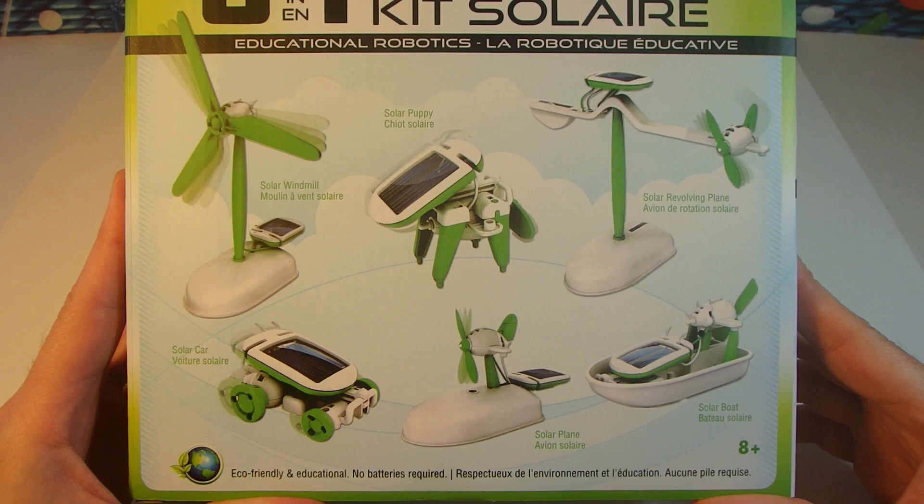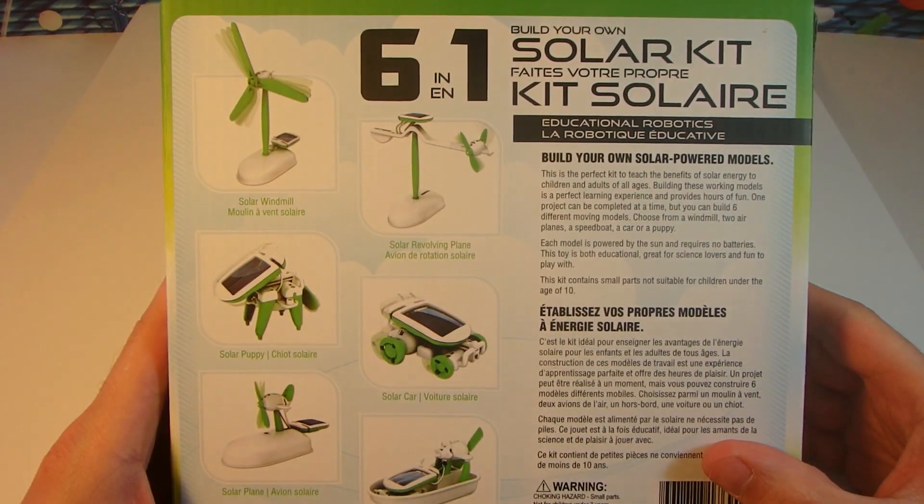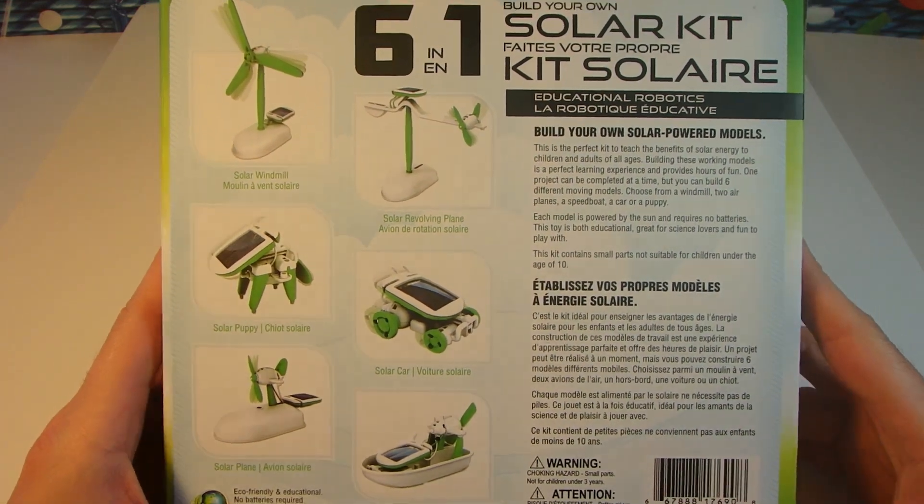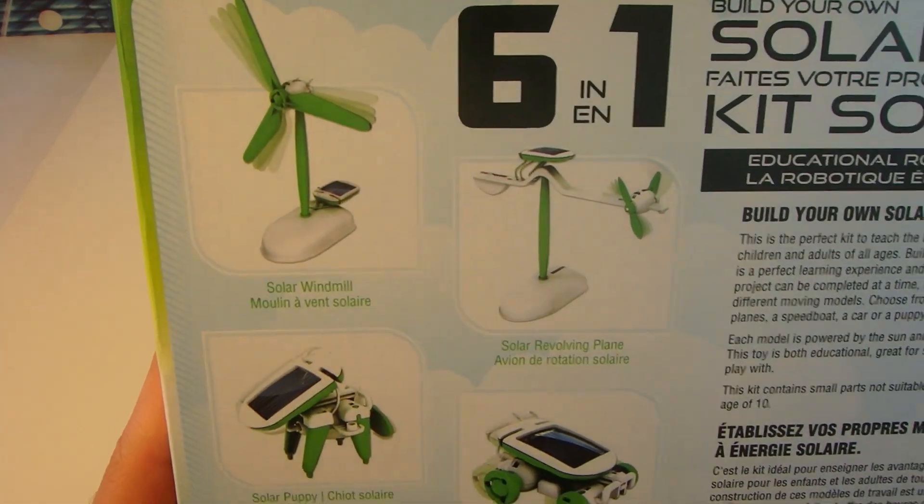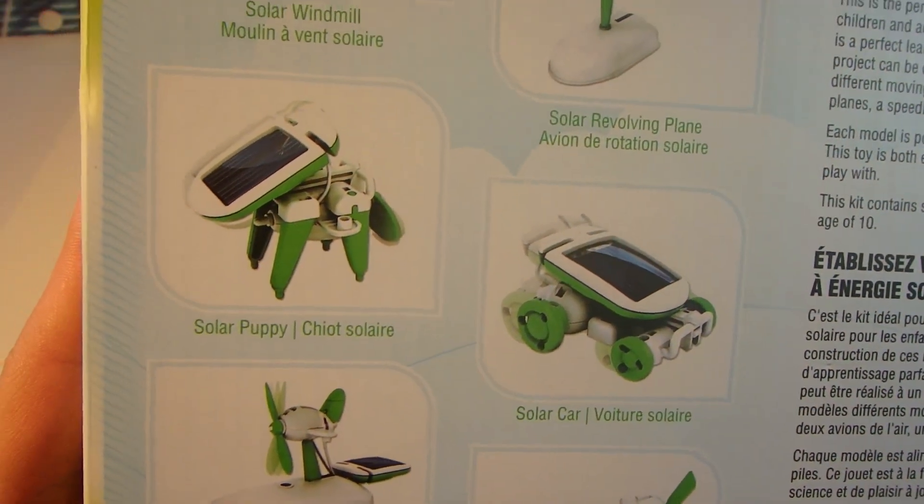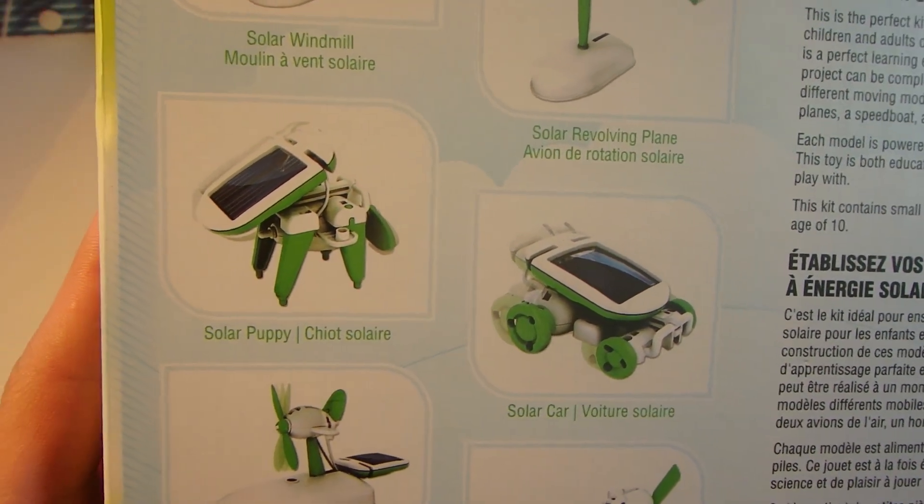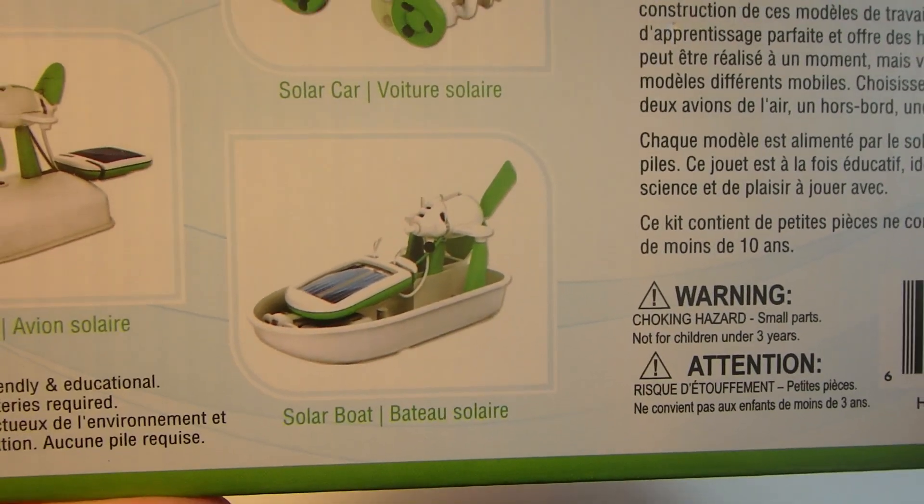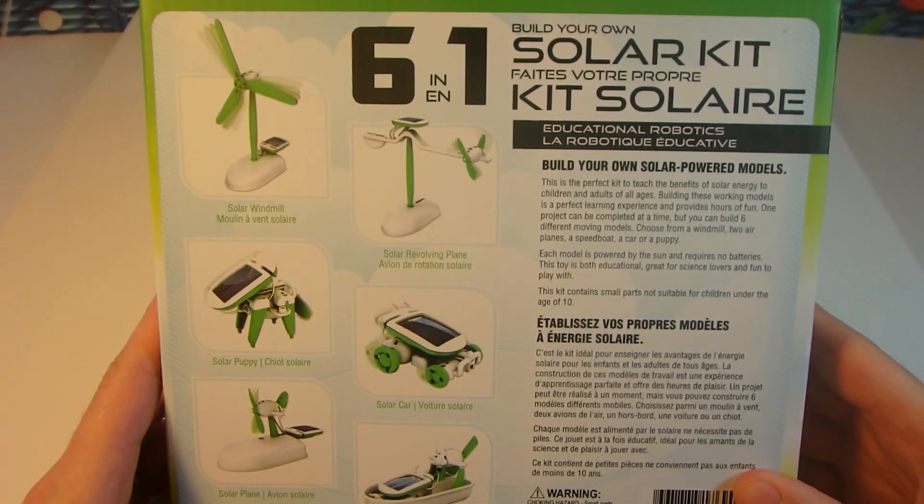Solar power means that it converts sunlight from the sun into electrical energy and we can use it to power a solar windmill, a solar revolving plane, a solar puppy - I think I'm most looking forward to making that one - a solar car, solar plane, and a solar boat. Let's have a look inside and see what we got.